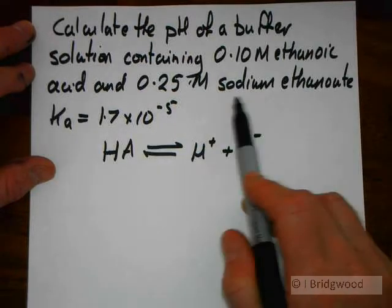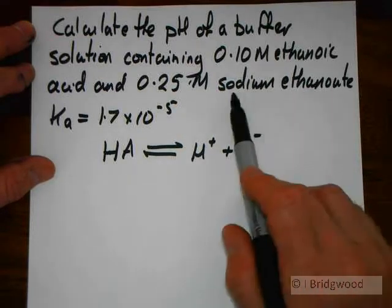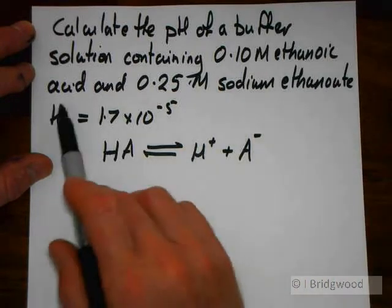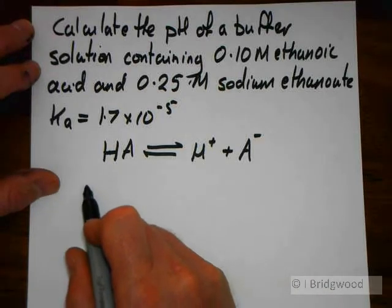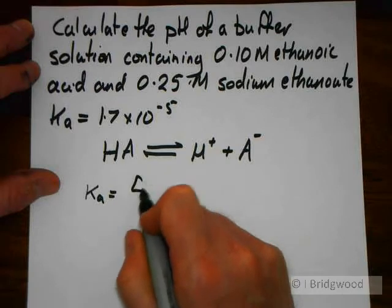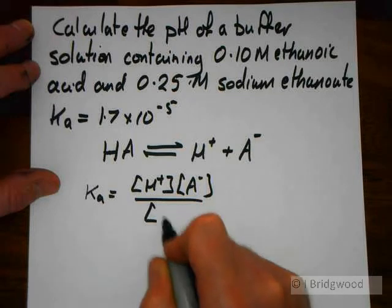But what we also have is the sodium ethanoate, the salt. So the A minus is being supplied by that, whereas the HA is being supplied by the ethanoic acid. Now our Ka expression will still hold: Ka equals concentration of H plus, concentration of A minus over concentration of HA.